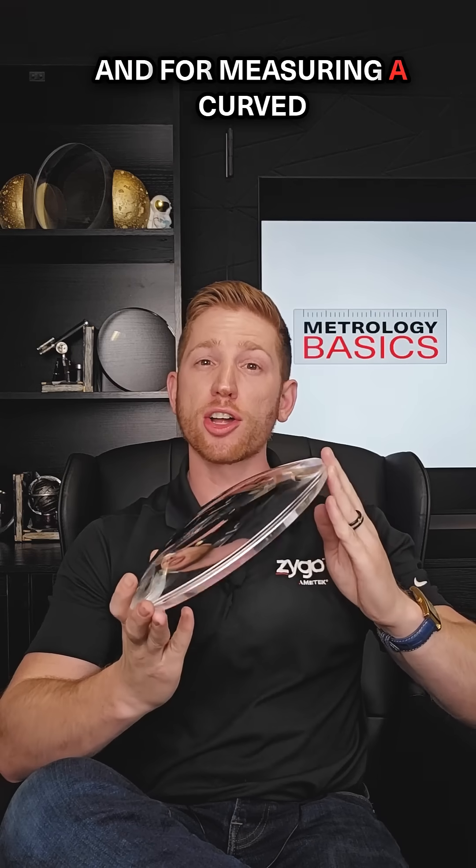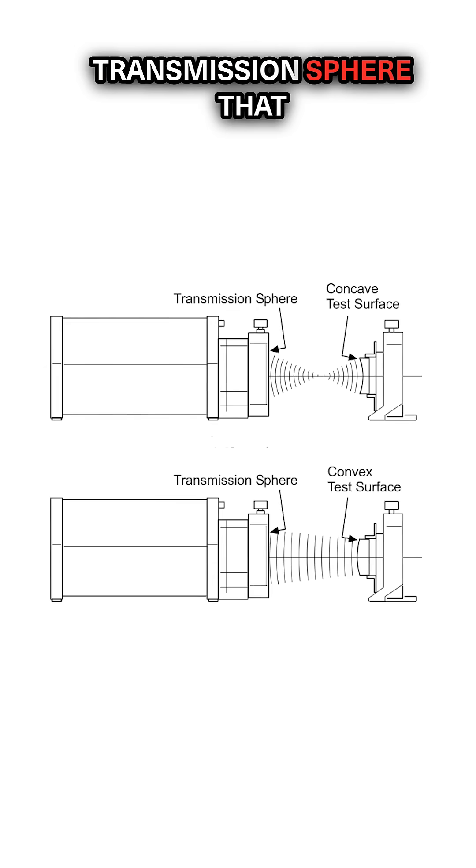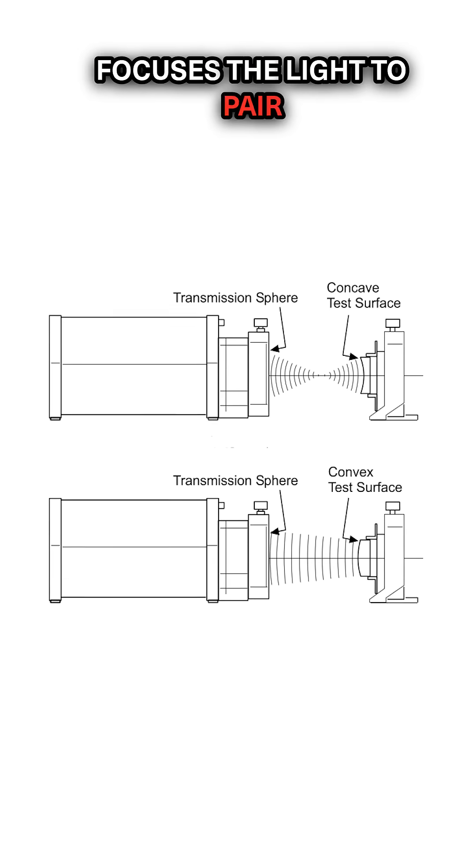And for measuring a curved surface like a lens, you add something called a transmission sphere that focuses the light to pair with what you're measuring.